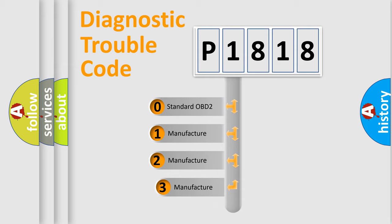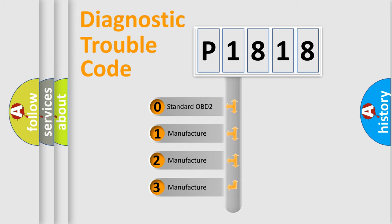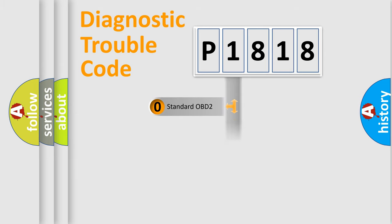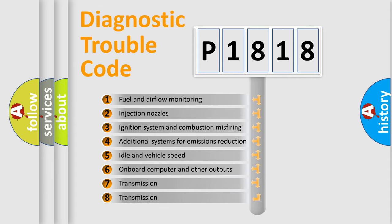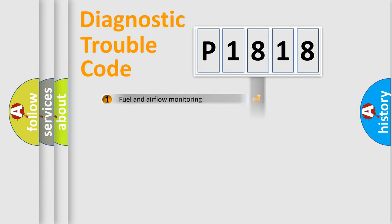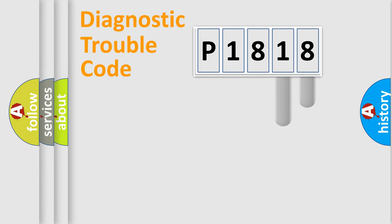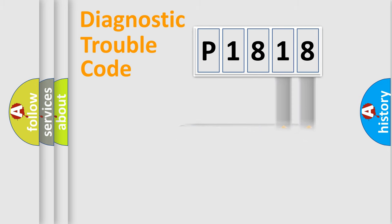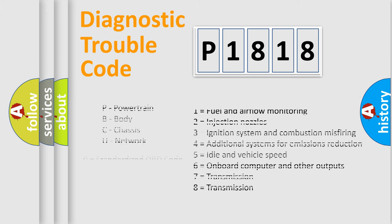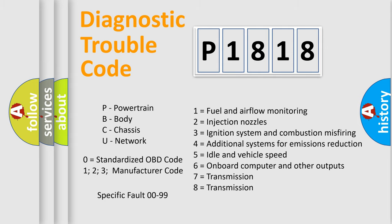If the second character is expressed as zero, it is a standardized error. In the case of numbers 1, 2, or 3, it is a more manufacturer-specific expression of the car error. The third character specifies a subset of errors. This distribution is valid only for the standardized DTC code, and only the last two characters define the specific fault of the group. Such a division is valid only if the second character code is expressed by the number zero.